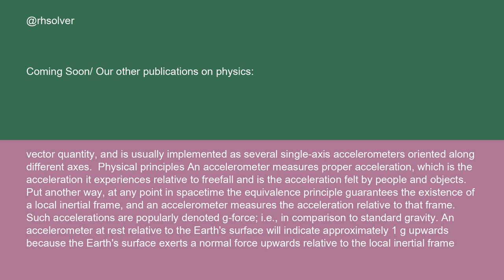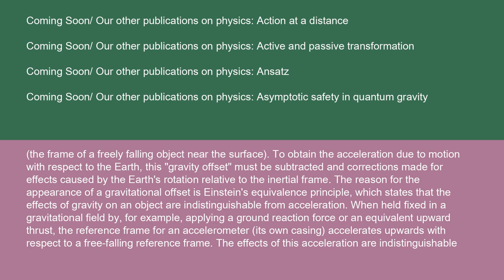Such accelerations are popularly denoted g-force, in comparison to standard gravity. An accelerometer at rest relative to the Earth's surface will indicate approximately 1 g upwards because the Earth's surface exerts a normal force upwards relative to the local inertial frame — the frame of a freely falling object near the surface. To obtain the acceleration due to motion with respect to the Earth, this gravity offset must be subtracted and corrections made for effects caused by the Earth's rotation. The reason for the appearance of a gravitational offset is Einstein's equivalence principle, which states that the effects of gravity on an object are indistinguishable from acceleration.